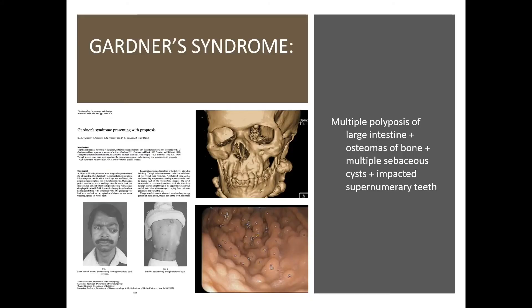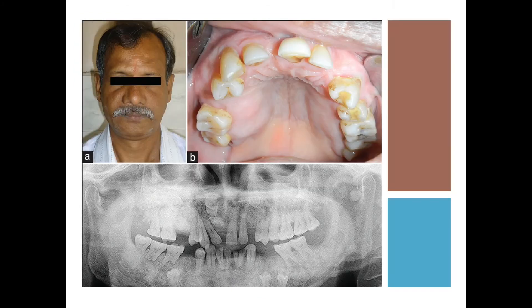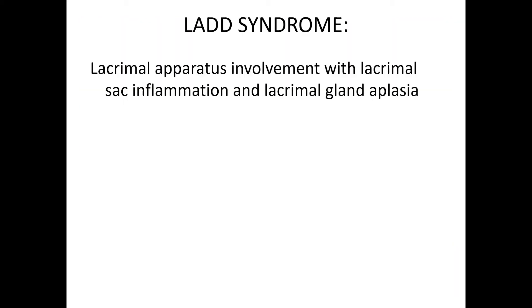Gardner syndrome — in Gardner syndrome there is multiple polyposis of the large intestine. You can see multiple polyposis of the intestine. Then there are sebaceous cysts, and also multiple impacted supernumerary teeth. This is Gardner syndrome.